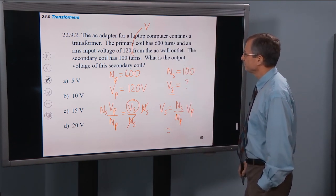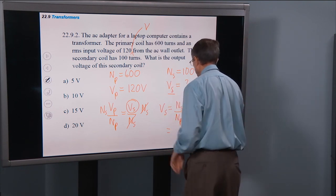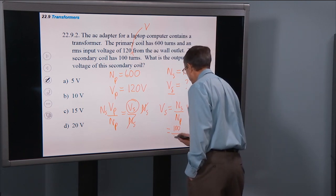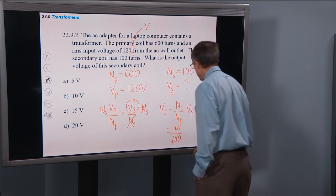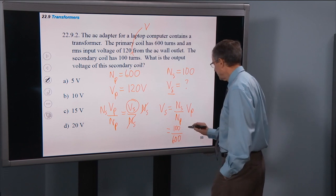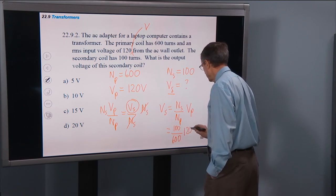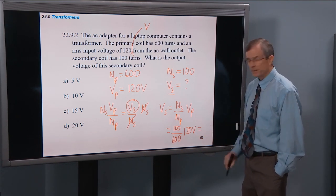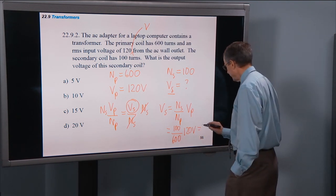Ns we have is 100, Np is 600, Vp is 120 volts. So that gives us one-sixth of 120 volts, which is just 20 volts.